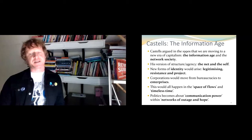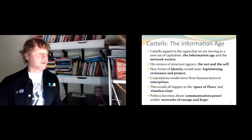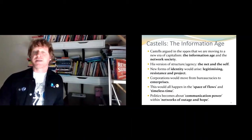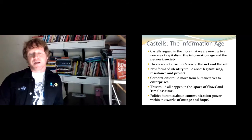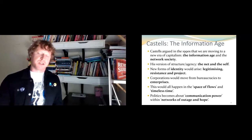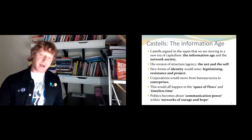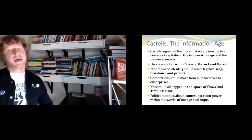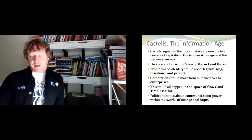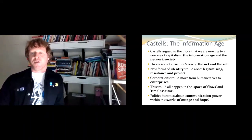In many ways, those predictions and that analysis have played out — he was quite accurate in seeing what was going on. That's not to say the production of things isn't still hugely important, but even the production of stuff now has a whole infrastructure of digital communication technology that tracks where things are, tracks workers, and takes our data to find what we like and sell us those products. In particular, an interesting thing he thought about was a new relation between what we've been calling structure and agency — what he called the net and the self.